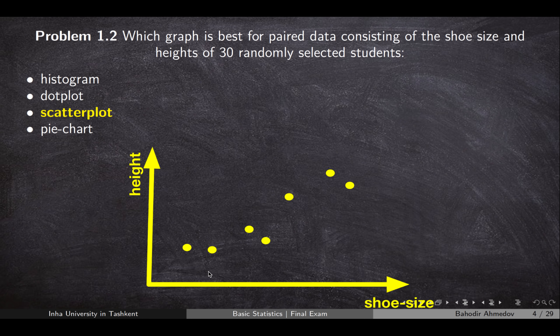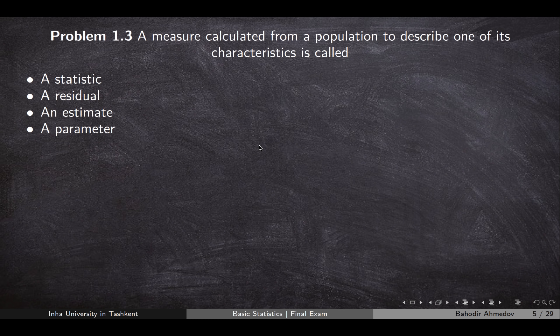Since the shoe size is getting bigger and bigger, the height is also getting higher and higher. The third question asks for a numerical measurement of the population. A numerical measurement of the population is called a parameter.